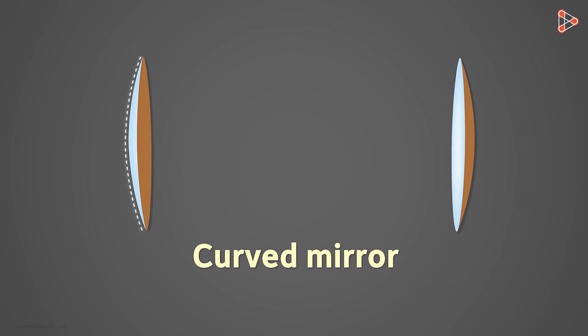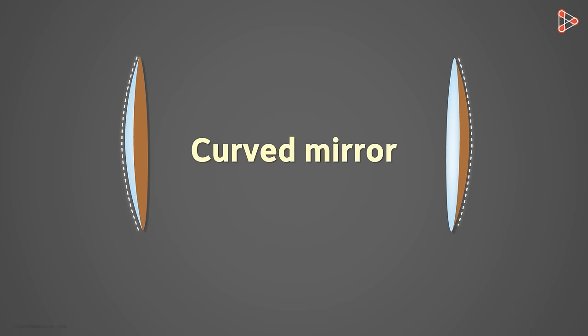What about this one? This is also a curved mirror. The difference between the two is that the reflecting surface of this mirror is curved inwards, whereas the reflecting surface of this mirror is curved outwards.